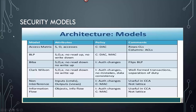For security models, the architecture models include access matrix, Bell-LaPadula, Biba, Clark-Wilson, non-interference, information flow, and their attributes — what they're allowed to do and their policies. The Bell-LaPadula model is MAC — mandatory access control — at government level. Remember: no read up, no write down. There are actually easy ways to remember these.